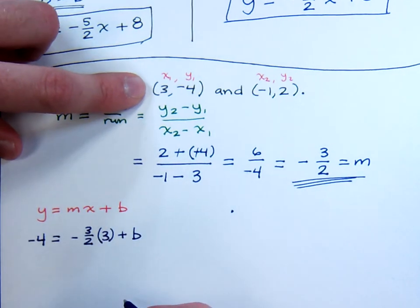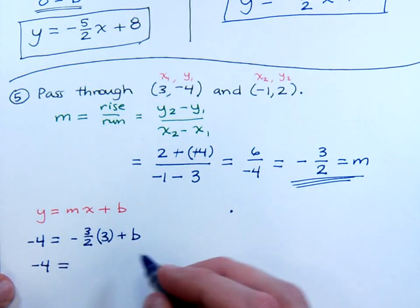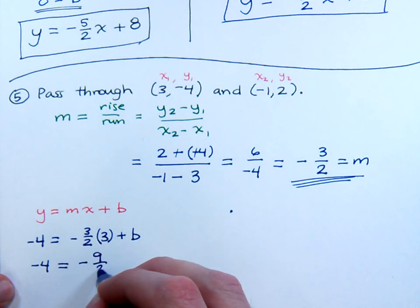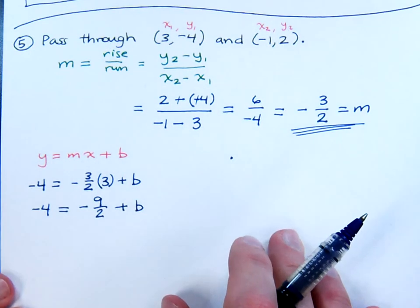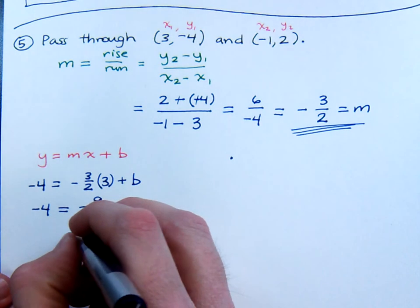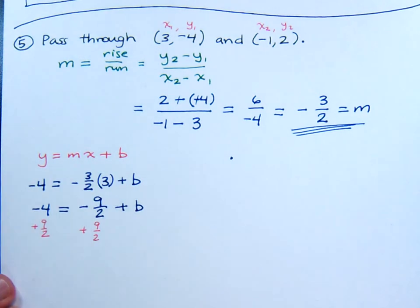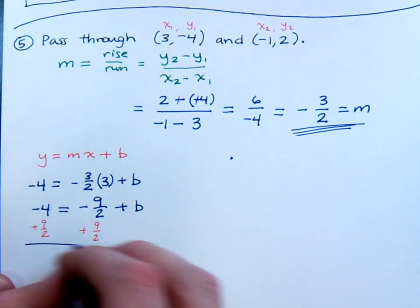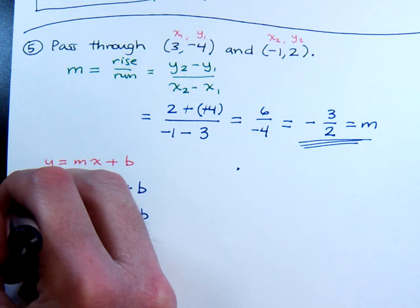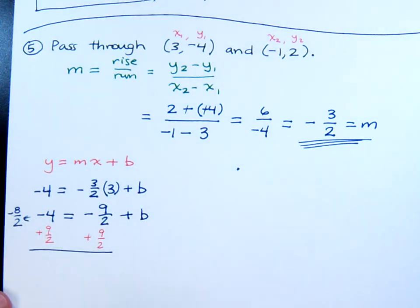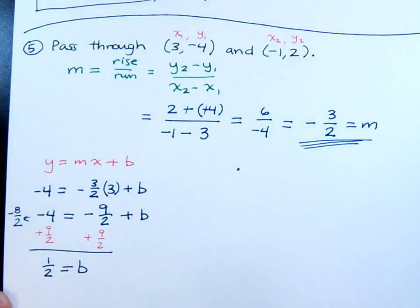That means all we have to do now is find the b. So here is negative 4. That's equal to negative 9 halves plus b. Now when we solve this guy for b, there's just going to be a matter of us adding 9 halves to both sides of the equation. Keep in mind that this negative 4 is the same thing as saying negative 8 halves. I hope that we can work with fractions. Yeah, you've got to be able to work with fractions. So 1 half is equal to b, and what do you know? You've got your b.